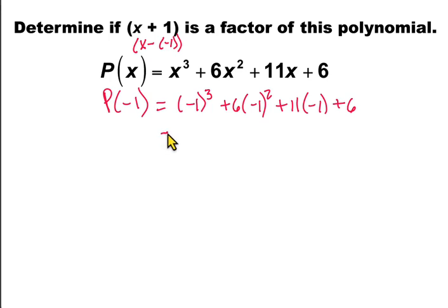Simplifying, we get negative 1 plus negative 1 squared is just 1, so we get plus 6. 11 times negative 1 is minus 11 plus 6.